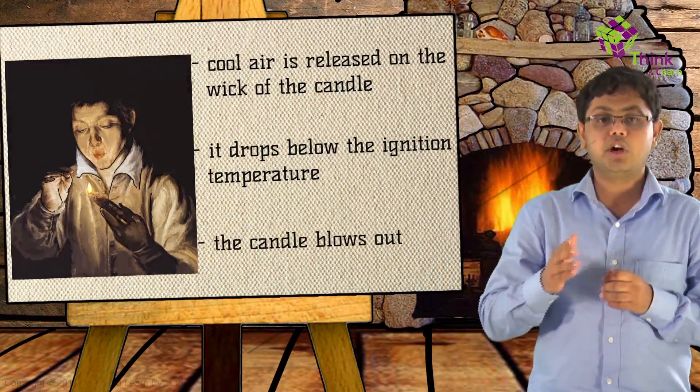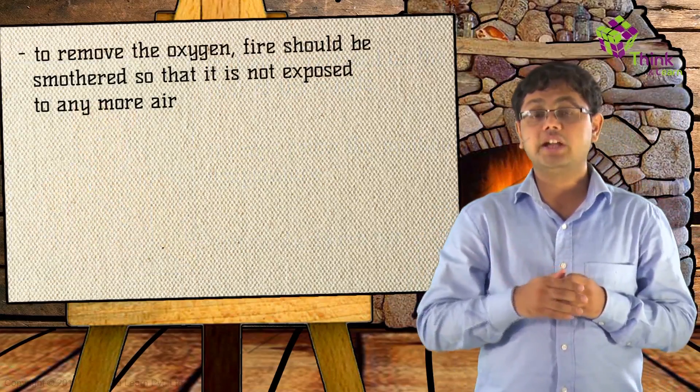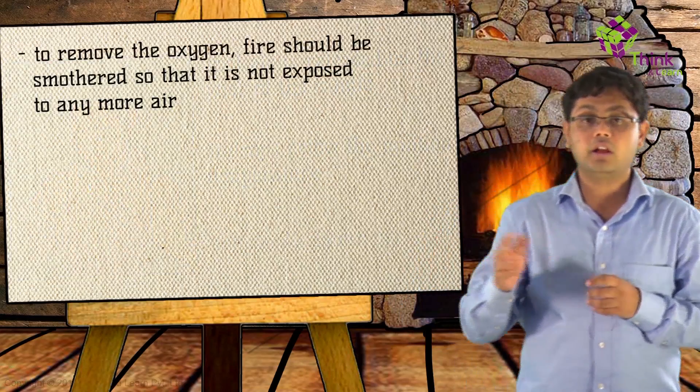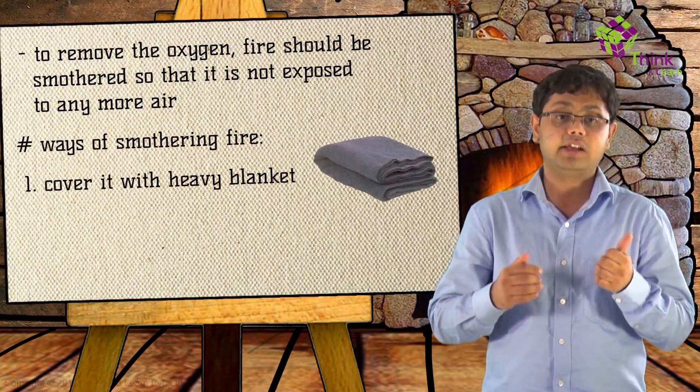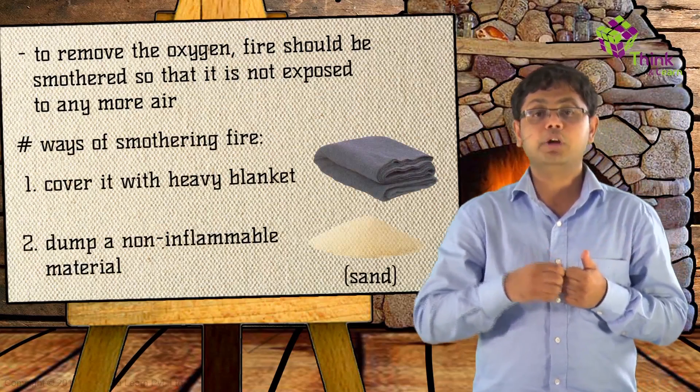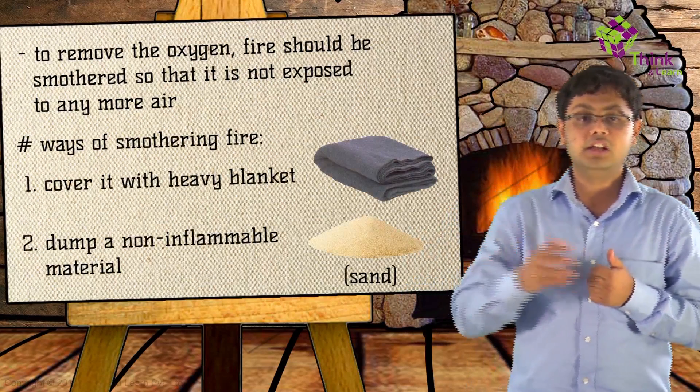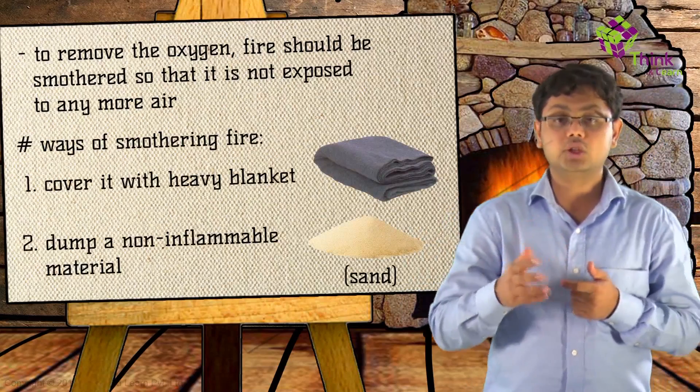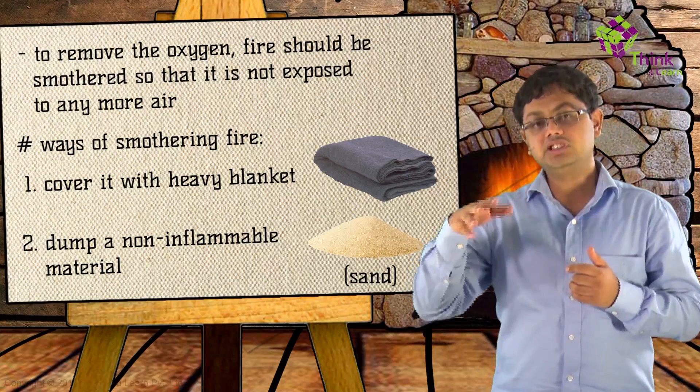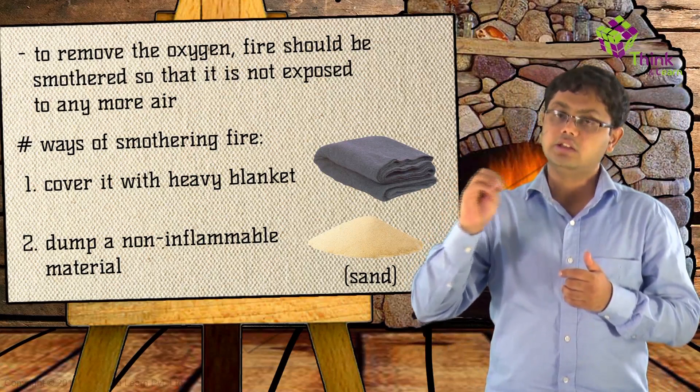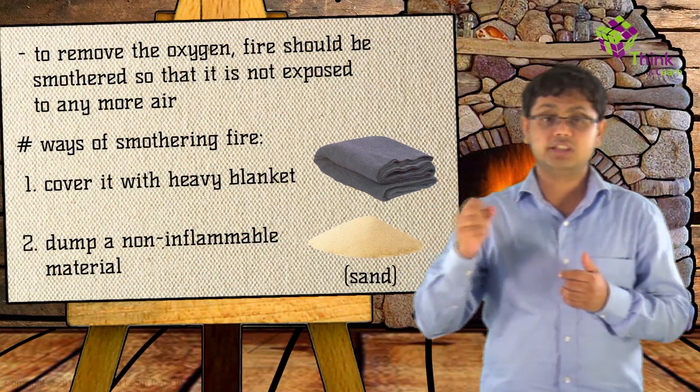To remove oxygen, you can smother the fire so that it is not exposed to any more air. One way to smother the fire is to cover it with, say, a heavy blanket. Another way is to dump a non-inflammable material such as sand or baking soda on top of it so that the oxygen basically gets cut out. And if oxygen gets cut out, then the fire automatically extinguishes itself.